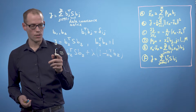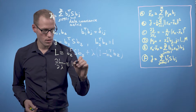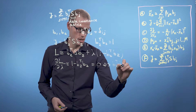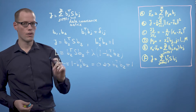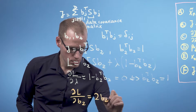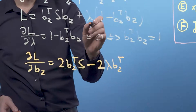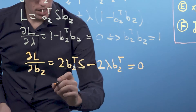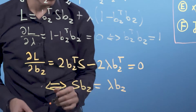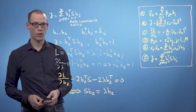The Lagrangian is b2 transpose s b2 plus lambda times (1 minus b2 transpose times b2), where lambda is the Lagrange multiplier. We compute the gradients with respect to b2 and lambda and set them to 0. The gradient with respect to lambda gives 1 minus b2 transpose times b2 equals 0, recovering our constraint. The gradient with respect to b2 gives 2b2 transpose times s minus 2 lambda b2 transpose equals 0, which holds if and only if s times b2 equals lambda times b2. Here we end up with an eigenvalue problem.